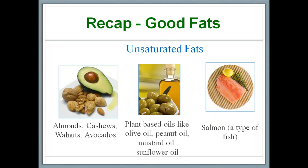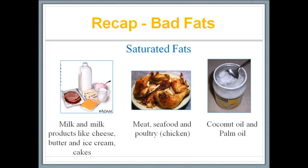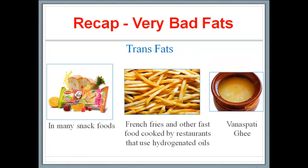Unsaturated fats are in plant products like nuts and avocados, plant-based oils like olive oil and mustard oil — all liquid at room temperature — and in certain fish like salmon. Saturated fats are found in milk and meat products and in oils solid at room temperature like coconut oil and palm oil. The recommendation is to replace saturated fats with unsaturated fats wherever possible. Trans fats are in many snack foods and fast food products cooked in hydrogenated oils — they are really bad for us and we should not be eating them.